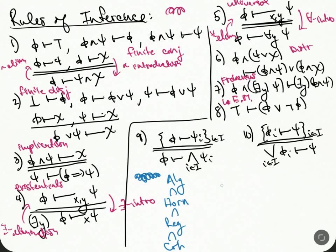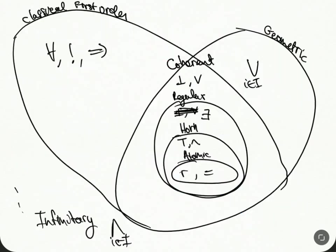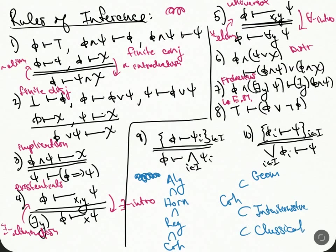Within coherent, it branches off into geometric, then intuitionist, and then classical. Classical, the final one, is where they include this rule here.